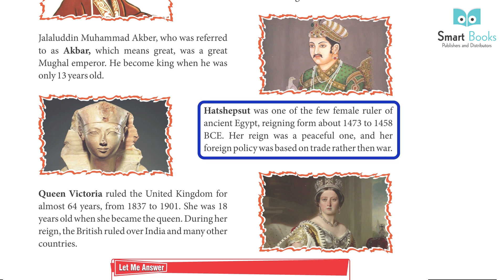3. Hatshepsut was one of the few female rulers of ancient Egypt, reigning from about 1473–1458 BCE. Her reign was a peaceful one, and her foreign policy was based on trade rather than war.